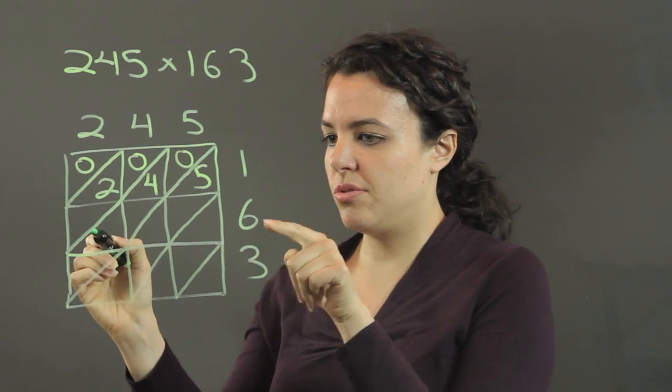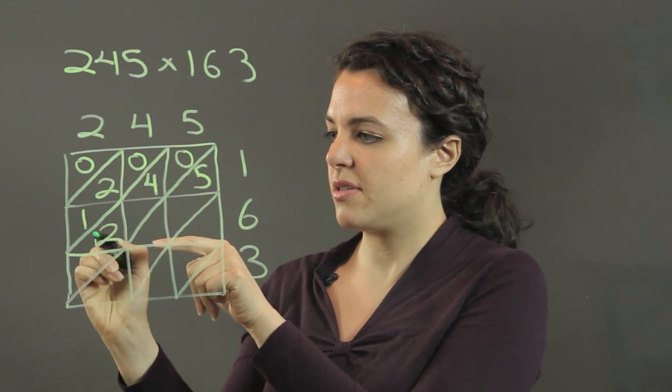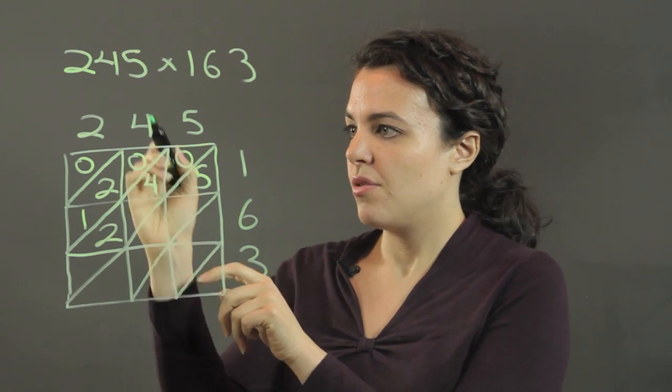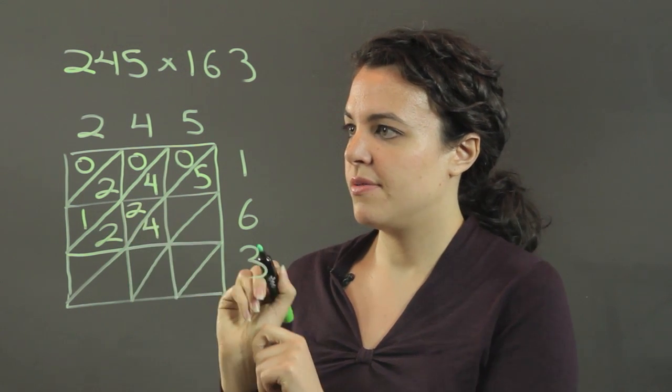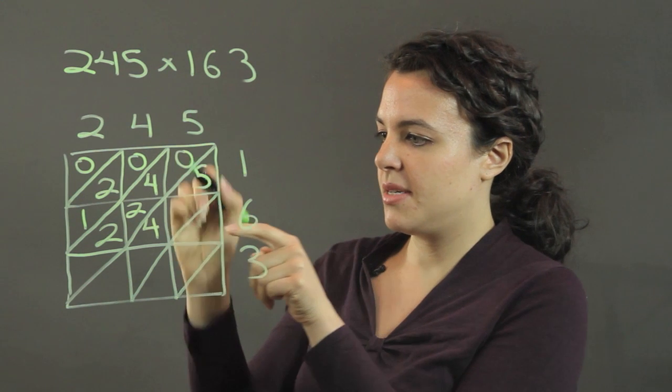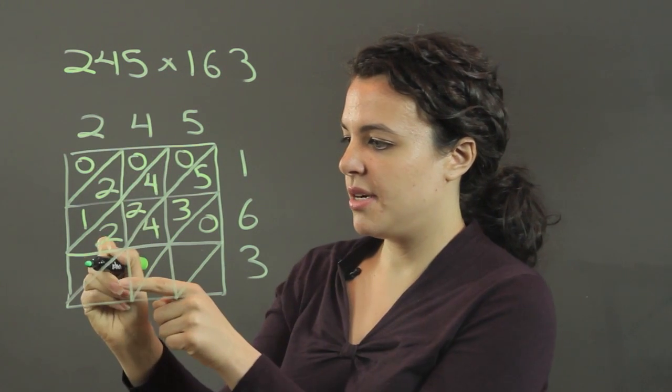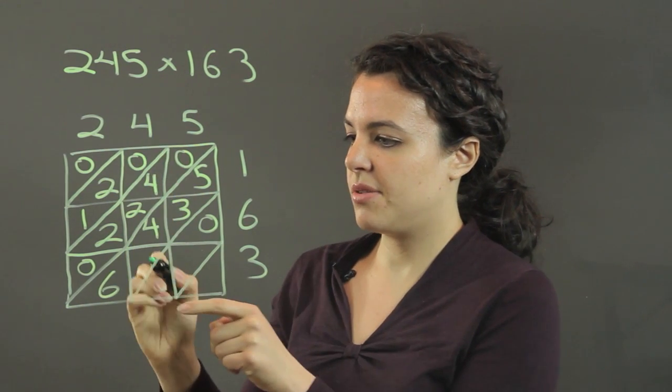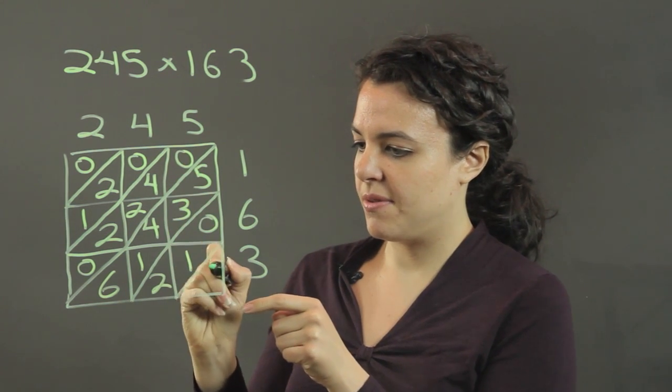Now I've got 2 times 6 is 12. So I write 12 like this, digits being divided here by the diagonal. 4 times 6 is 24, 5 times 6 is 30, 2 times 3 is 6, 4 times 3 is 12, and 5 times 3 is 15.